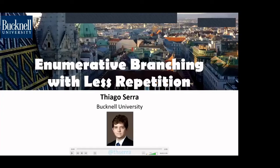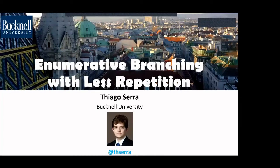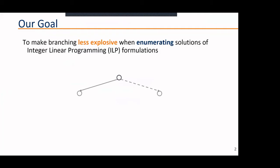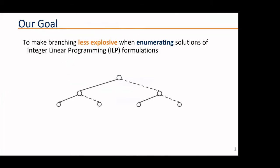The next talk is a one-author paper, which is rather rare. The author deals with compactly representing many solutions in terms of doing search. The speaker, Tiago Serra, presents work on enumerative branching with less repetition. The goal is to reduce the amount of branching when enumerating solutions of discrete optimization problems, such as integer linear programming, by identifying equivalent nodes in a branch-and-bound tree that would lead to exactly the same remaining solutions.